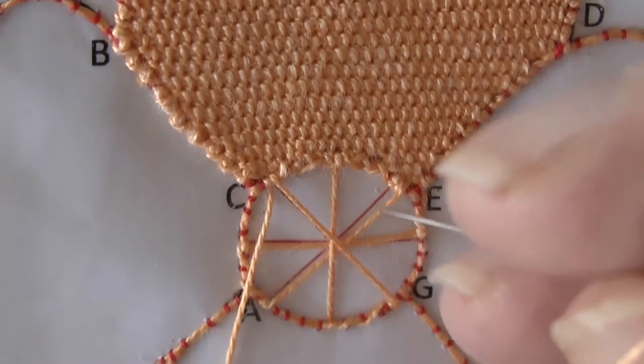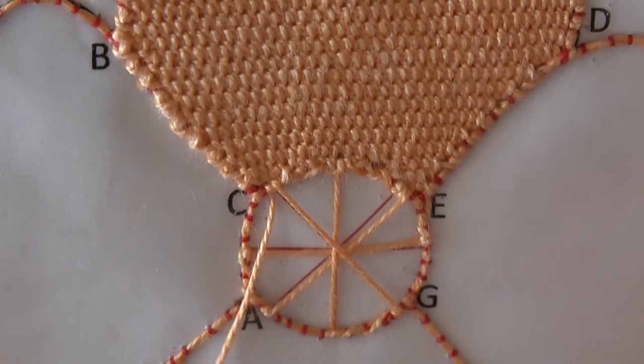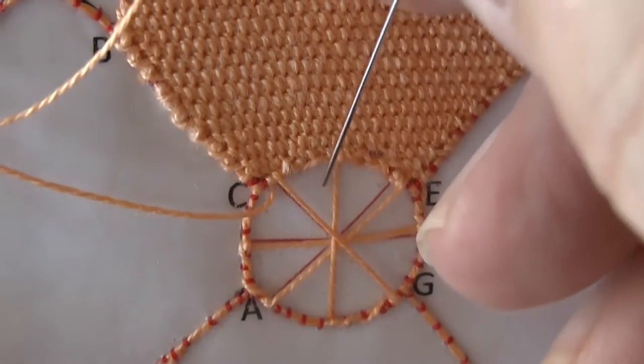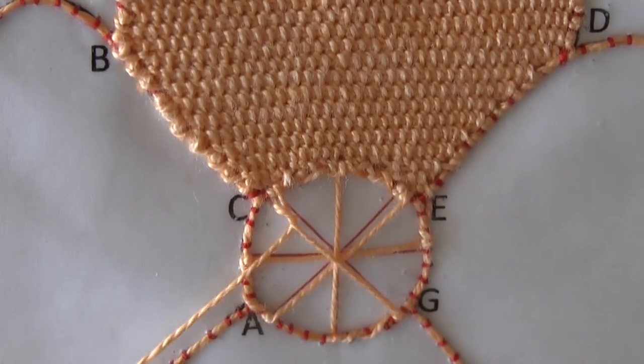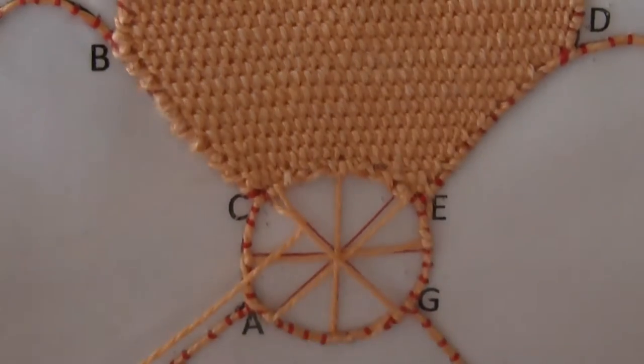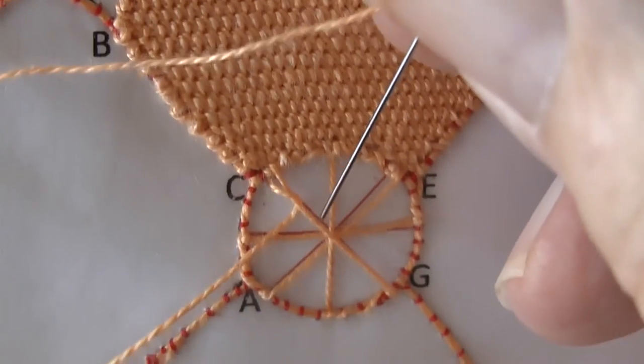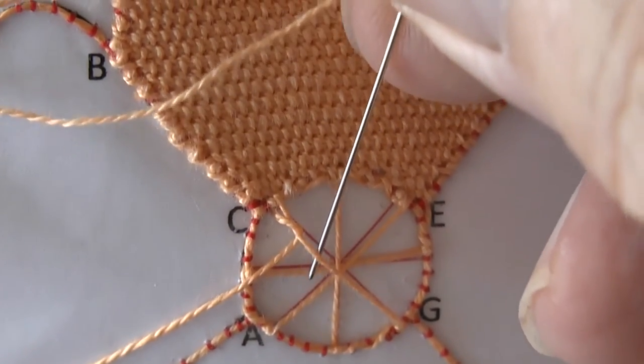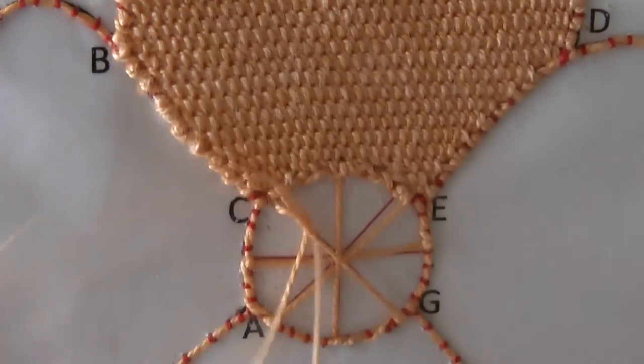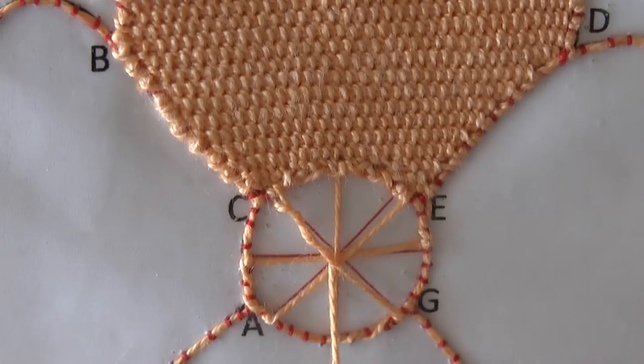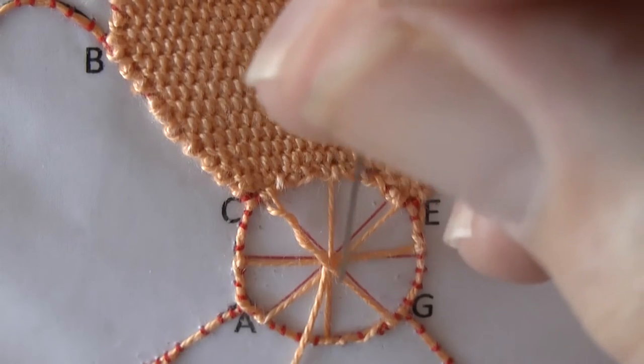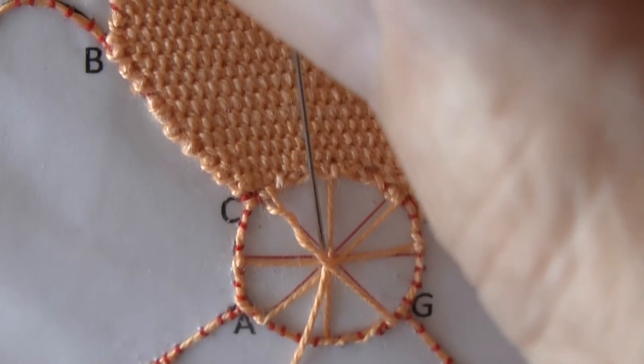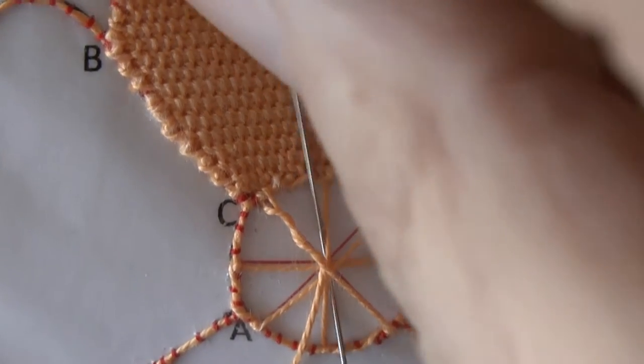As we're on this leg, whip down this particular leg of the spoke, just a couple of stitches. We're going to make a buttonhole through the center over all the spokes, and that will hold all the spokes in place.